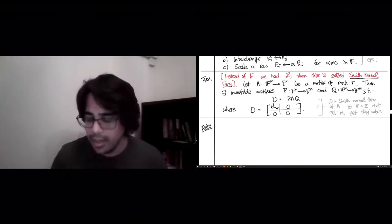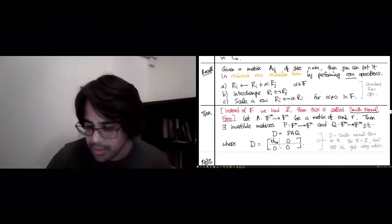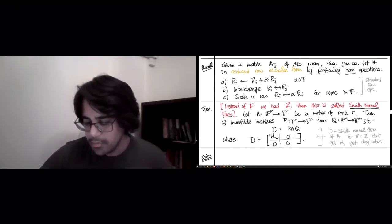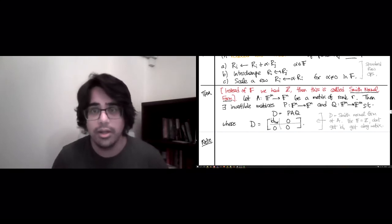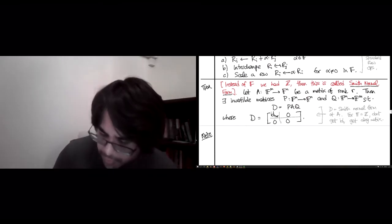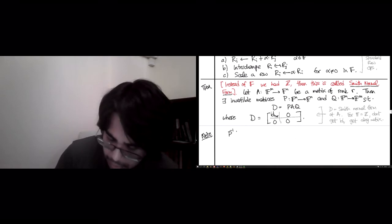And when we work over Z coefficients, you don't get the identity. In the upper left corner, we get a different diagonal matrix so that the diagonal entries, each one divides the next. Over a field, this is not going to matter. So, you can ignore everything written in gray on the right. And just think of this as a Smith normal form of a matrix with field coefficients. Okay. What's the point of this decomposition? The point is, we have defined kernels.